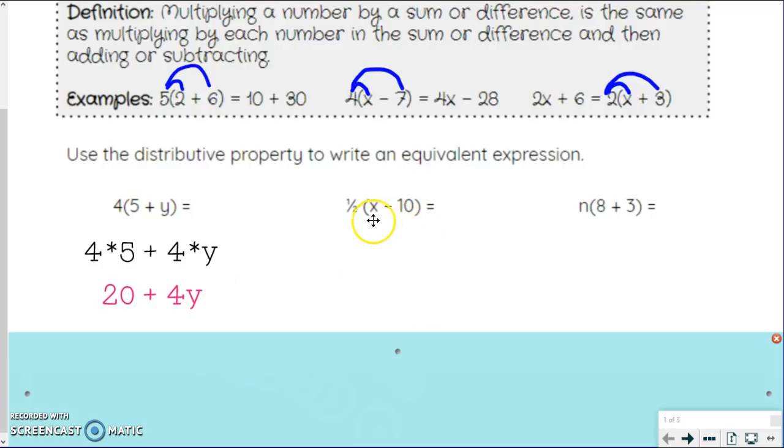Let's try another one. This time it's 1/2 times the difference of x minus 10. So we're going to start with 1/2 times x, then distribute the 1/2 to the 10. So if I actually do that, I'm going to get 1/2x minus, well half of 10 is 5. So I get 1/2x minus 5. And since these are algebraic expressions, we can't go any further with them.